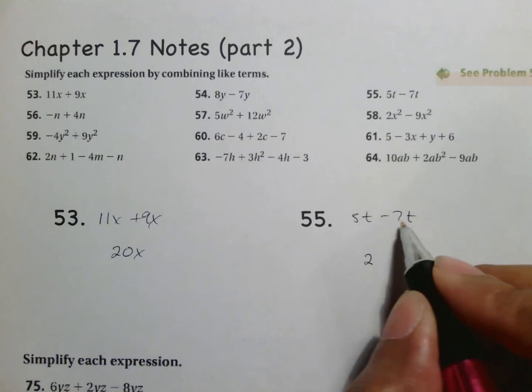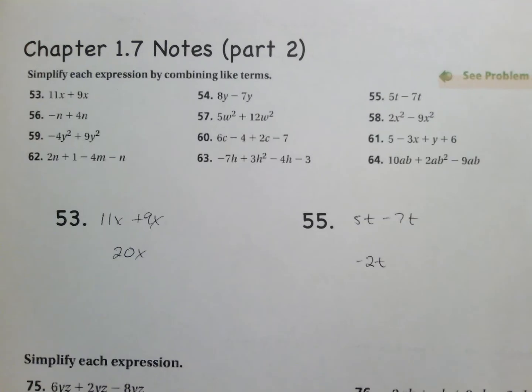7 minus 5 is 2. 7 is negative which makes it a negative. And because these are both t's you want to have negative 2t's.